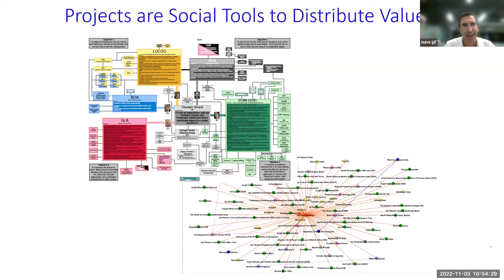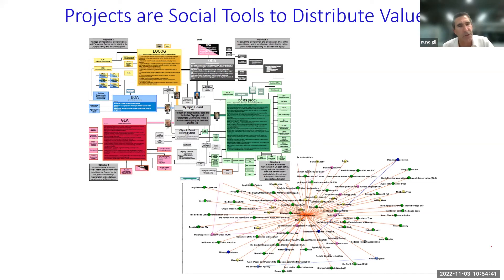You can see the amount of stakeholders — and they are all essential in the sense that they control essential resources without which the project will not progress, whether it is political support, permits, consents, or other types of resources. So you really have to negotiate that scope with the stakeholders.